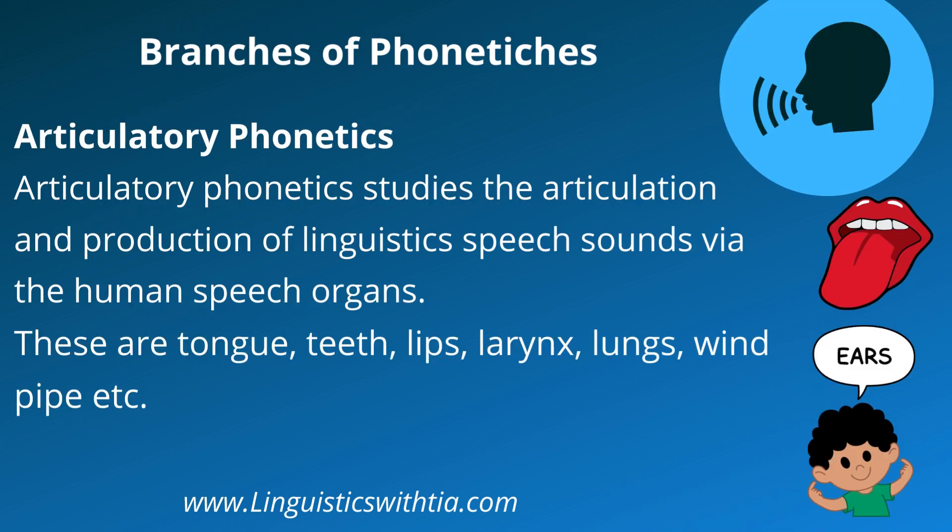In the branches of phonetics, first we have articulatory phonetics. Articulatory phonetics studies the articulation and production of linguistic speech sounds via the human speech organs. These organs are the tongue, teeth, lips, larynx, lungs and windpipe. The production of human speech sounds via the apparatus — those organs of the human body used for producing speech sounds — is called articulatory phonetics. Important articulators are lungs, larynx, teeth, soft and hard palate, velum, tongue and lips.